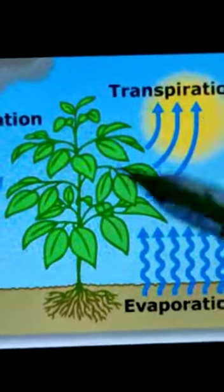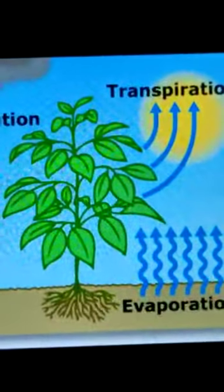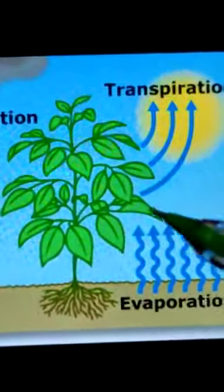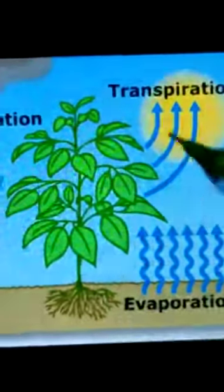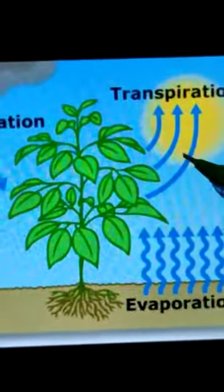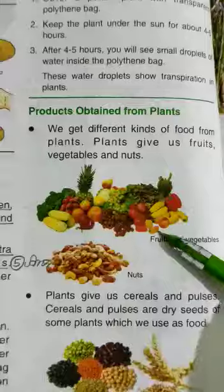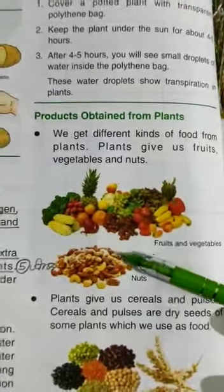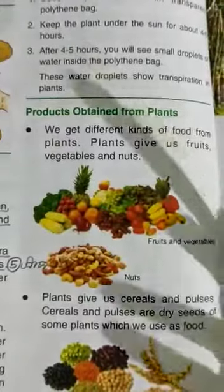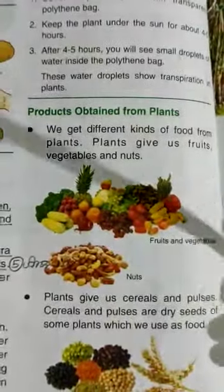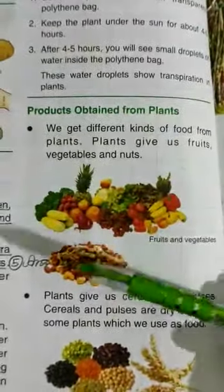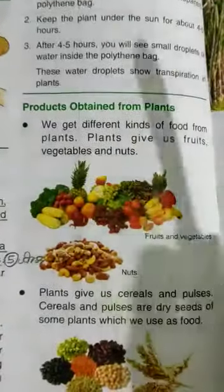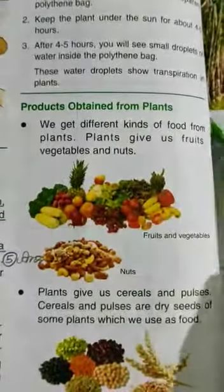Basically, transpiration is the loss of water from a plant in the form of water vapor. Small pores in the leaves allow water to escape as a vapor. Now let's understand what kinds of food we get from plants.